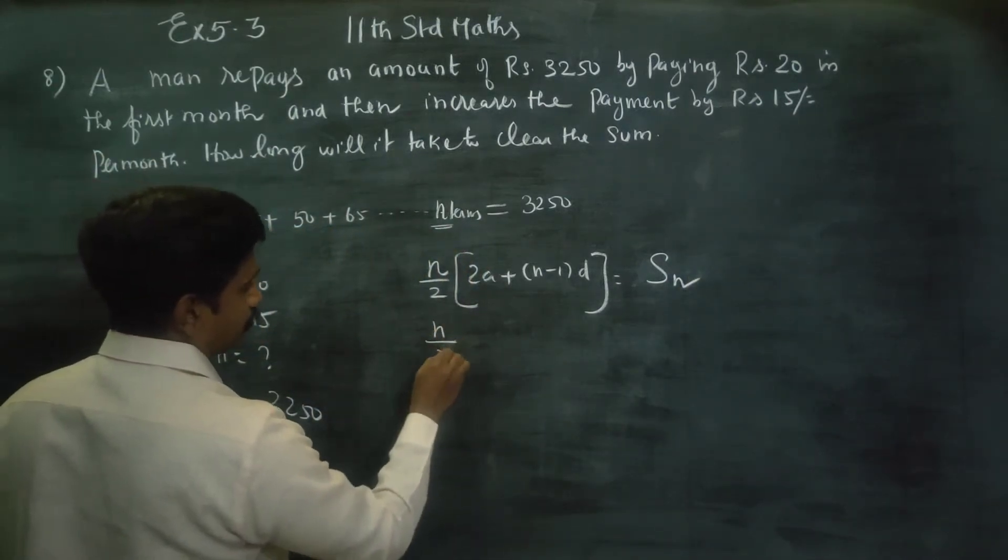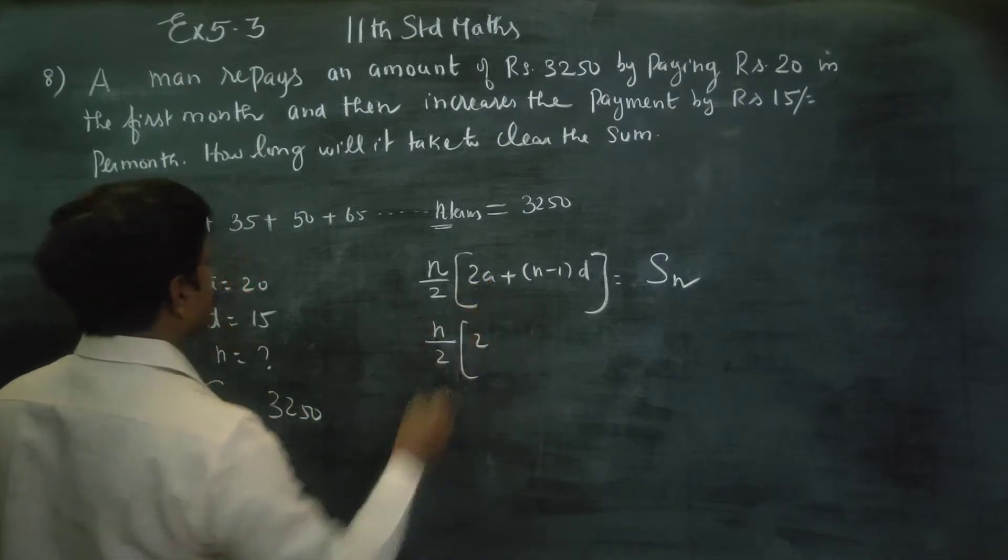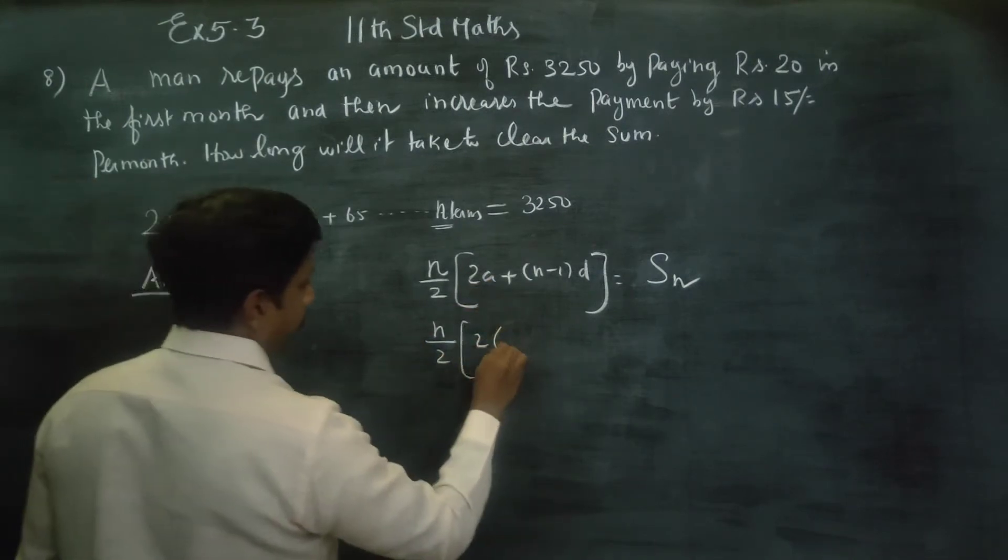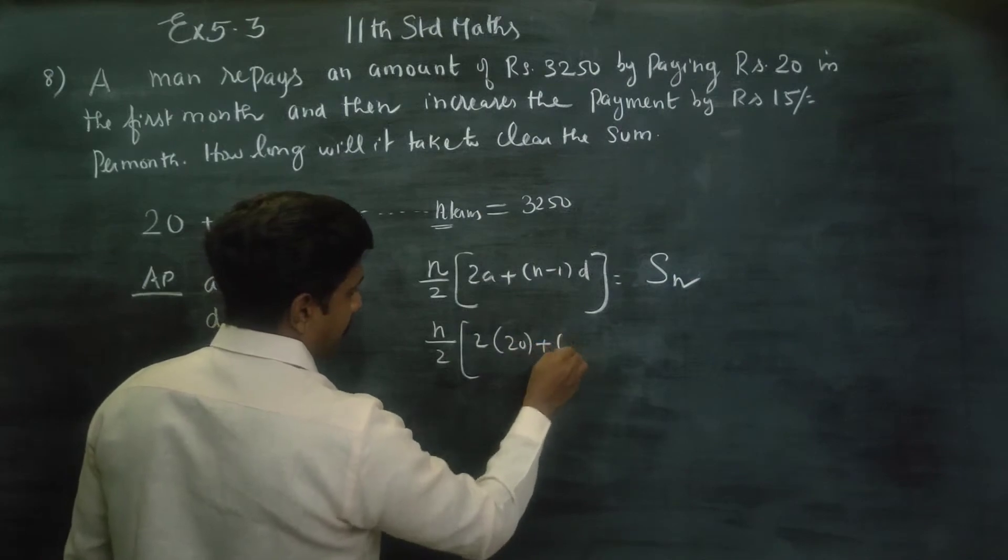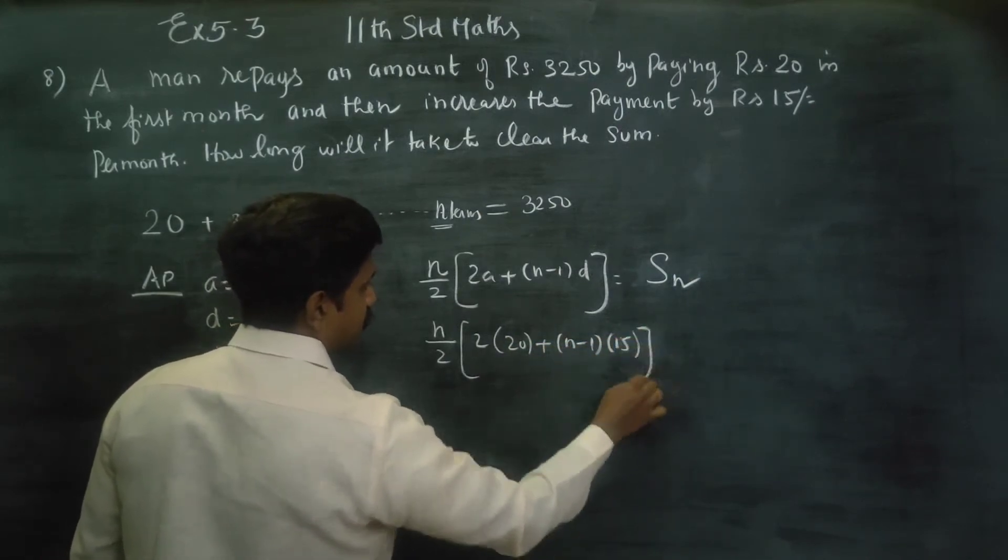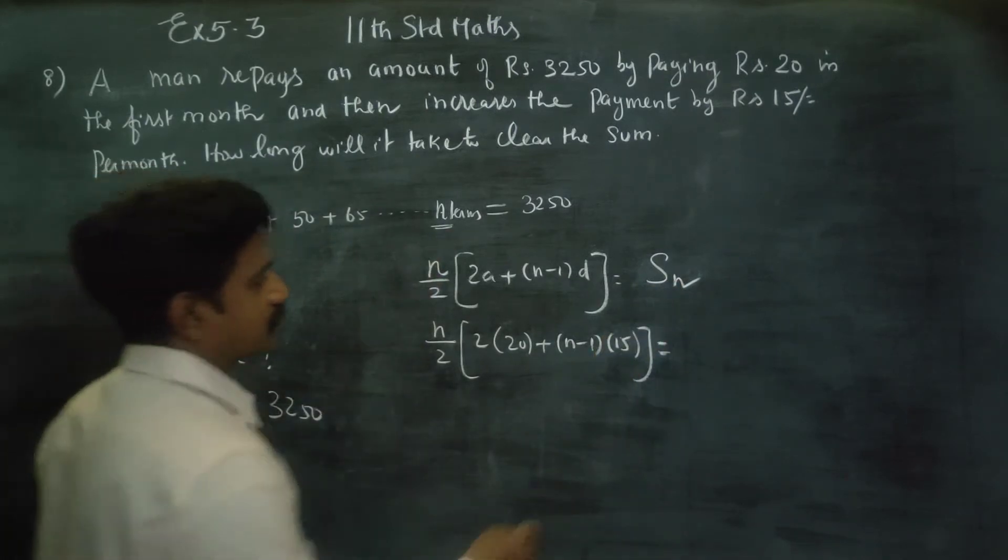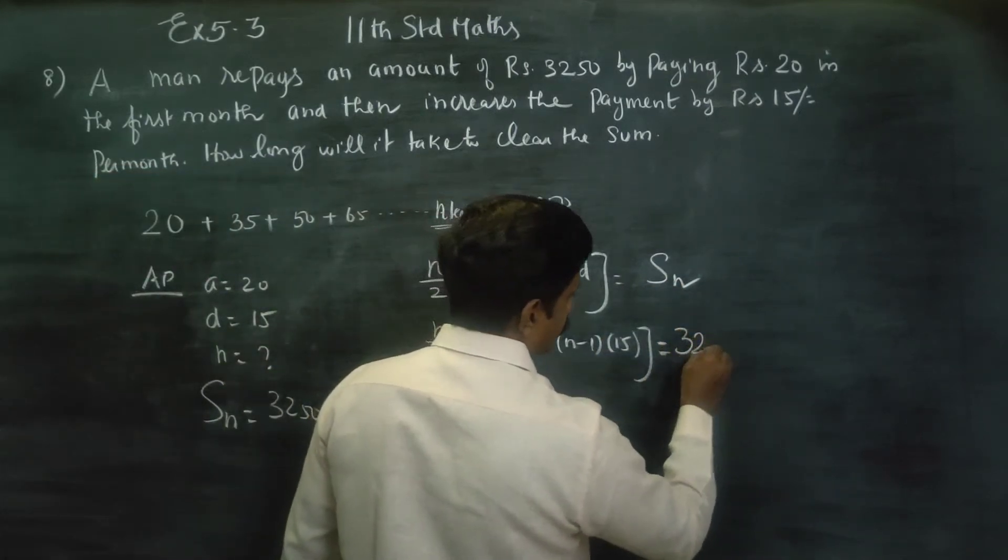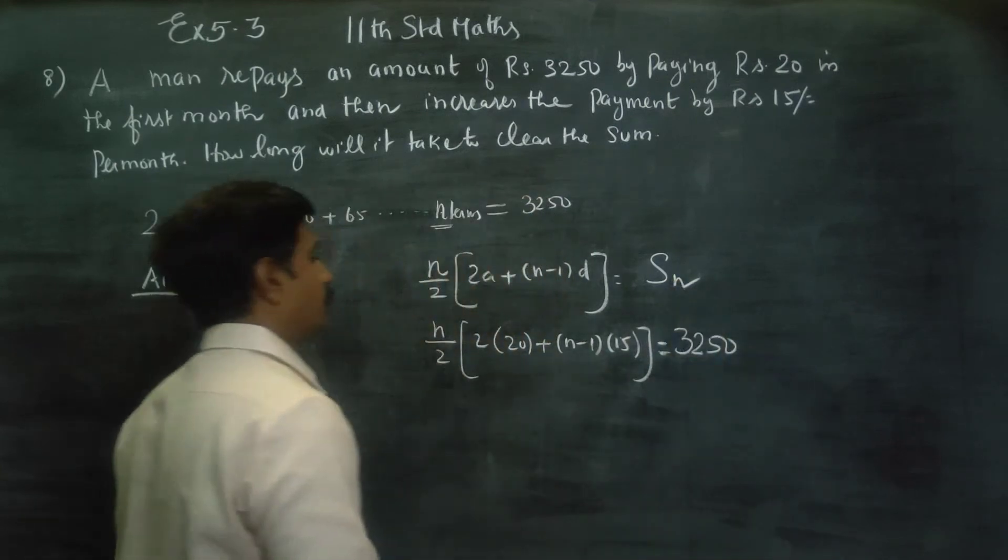n by 2, times 2a. a equals 20, n minus 1, d equals 15, the common difference. Sn, the total amount he has to pay, is 3,250.